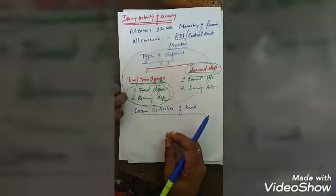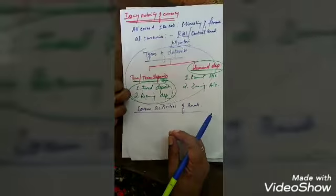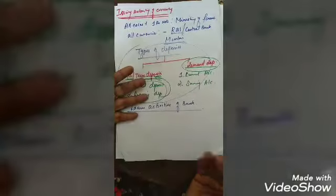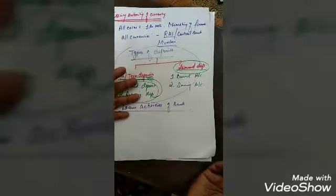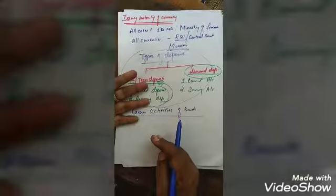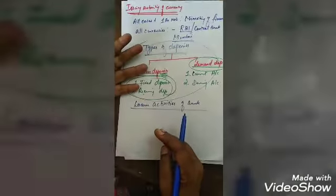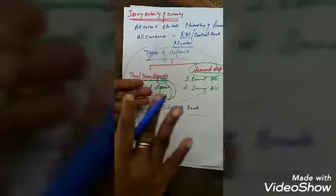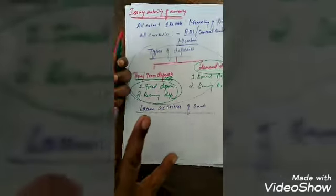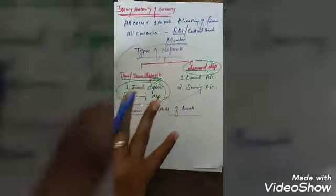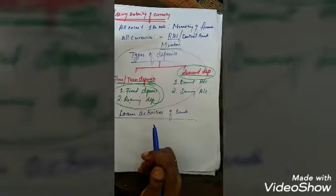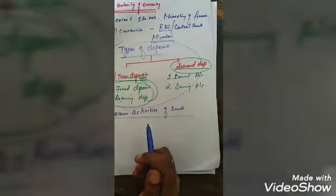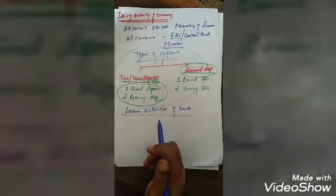For deposits, banks give a minimum rate of interest. For lending loans to the public, they charge a higher interest rate compared to what they give deposit holders. In the gap between these two interest rates, banks earn their main profit — that is how banks sustain themselves. Tomorrow we will see the next revision part. Study well, thank you.